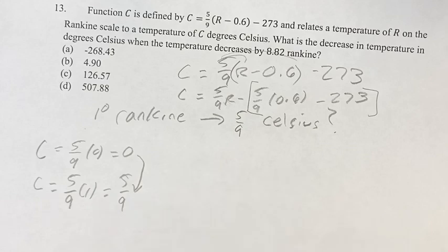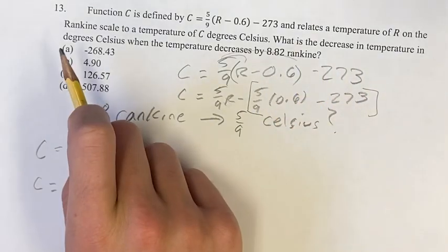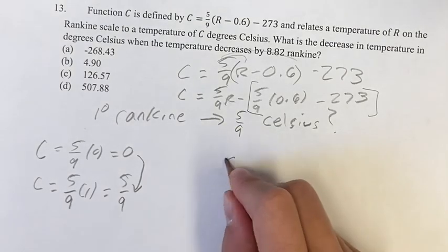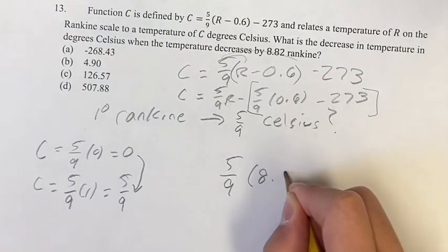Okay. So what is the decrease in temperature when the temperature decreases by 8.82? Well, you can just do 5 ninths times 8.82.